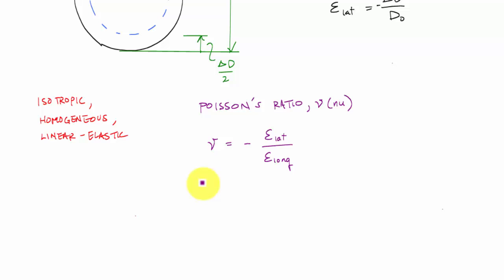Whether it's steel, aluminum, concrete, whatever it is. And in general, most materials, the Poisson's ratio is between 0 and 0.5. So, for example, steel has a nu of approximately 0.3.